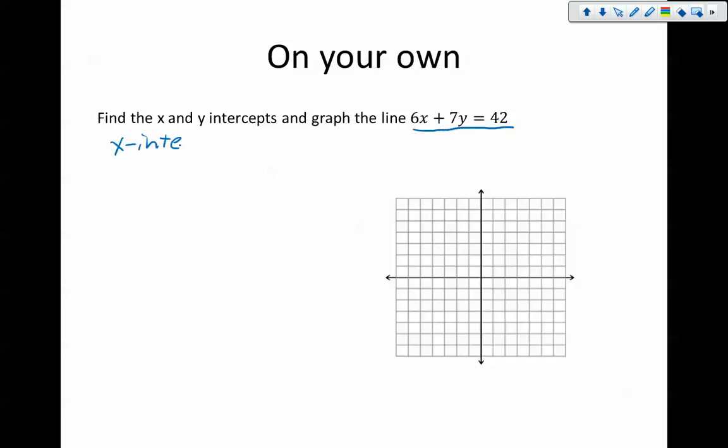We're going to find the x-intercept first. And the x-intercept is when we plug in 0 for y. So we get 6x plus 7 times 0 equals 42, or 6x equals 42, or x equals 7.